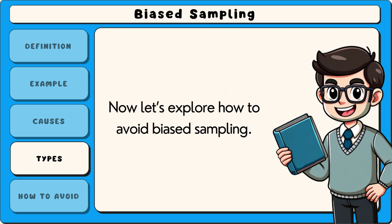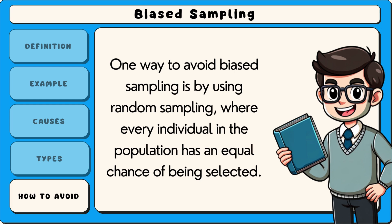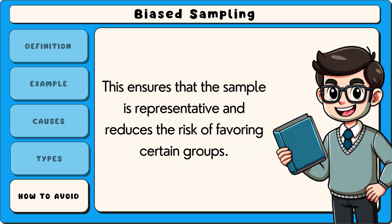Now let's explore how to avoid biased sampling. One way is by using random sampling, where every individual in the population has an equal chance of being selected. This ensures that the sample is representative and reduces the risk of favouring certain groups.